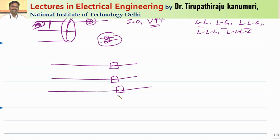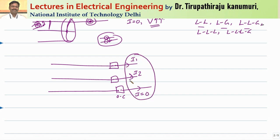Current I1 will pass in one phase and I2 in another, but in the third the current becomes zero. Because of this, imbalance comes in the current. Whenever unbalanced current comes due to open circuit — meaning only some phases are open-circuited, not all — this leads to unbalanced currents. This unbalanced loading of a three-phase circuit, if star-connected, leads to the circulation of negative sequence currents.